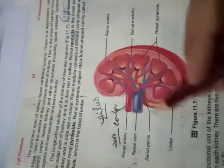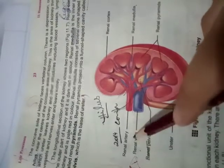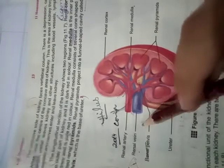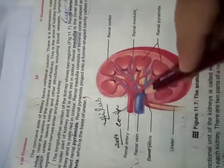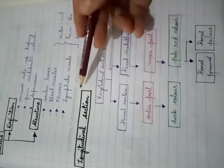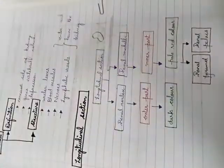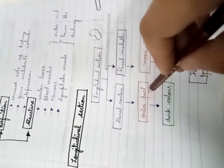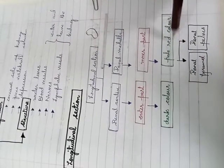In this area we have the ureter, the renal artery, and the renal vein. Blood vessels, veins, arteries, and nerves are all present in this hilus area. Now, if we cut a kidney in longitudinal section, we see two main regions: the outer part is called the renal cortex — dark colored — and the inner part is called the renal medulla — pale or light red colored.